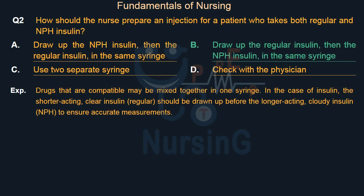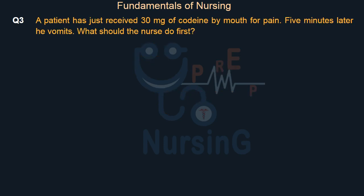Drugs that are compatible may be mixed together in one syringe. In the case of insulin, the shorter-acting clear insulin (regular) should be drawn up before the longer-acting cloudy insulin (NPH) to ensure accurate measurements.